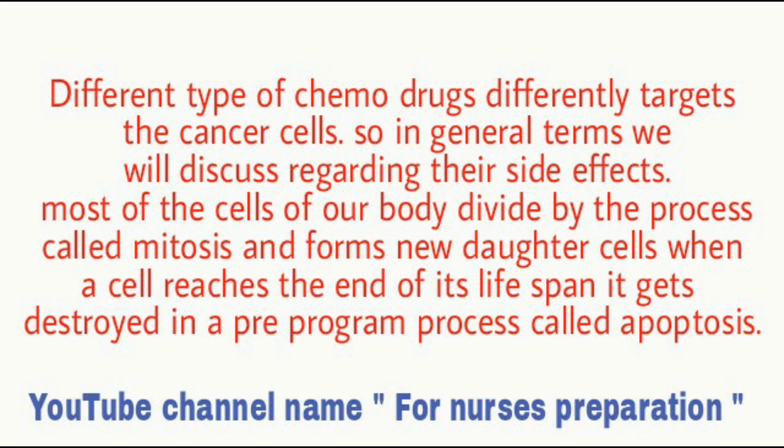Most of the cells of our body divide by a process called mitosis and form new daughter cells. When a cell reaches the end of its lifespan, it gets destroyed in a pre-programmed process called apoptosis.